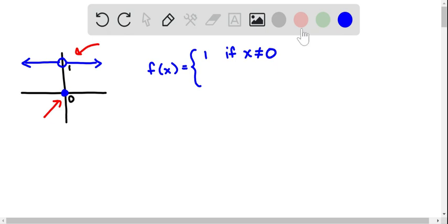And then for the bottom piece, it's just a point, it's the point 0, 0, so that's f of x equals 0, and for its domain, it's just when x equals 0.